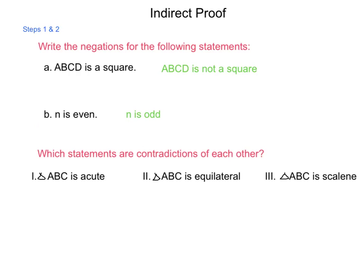So let's look at two and three. Can you have a scalene triangle that is also equilateral? That is false. So statements two and three cannot happen at the same time.